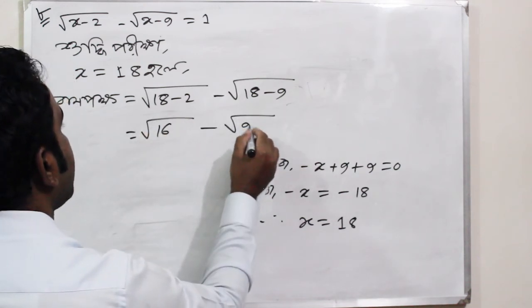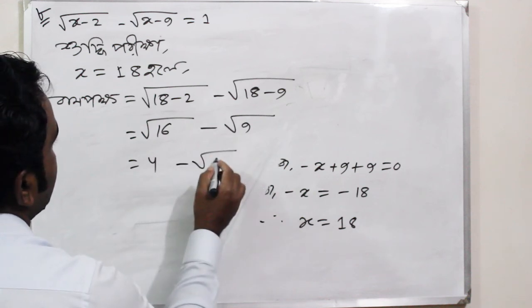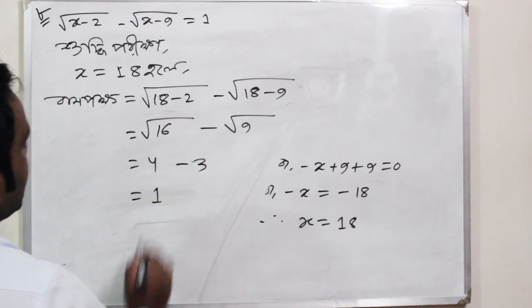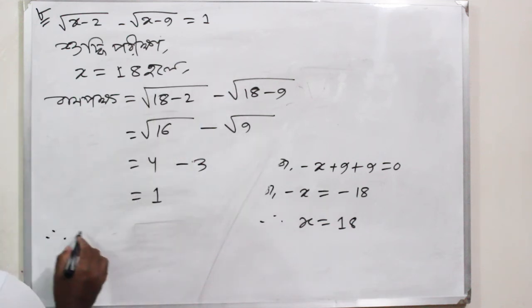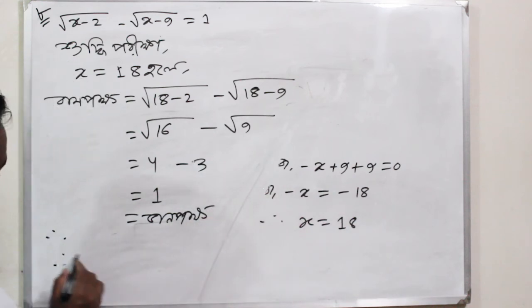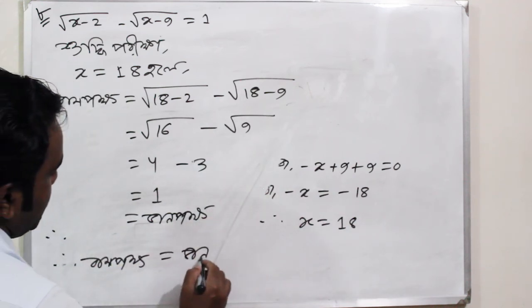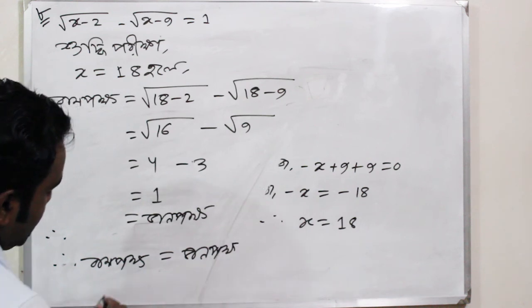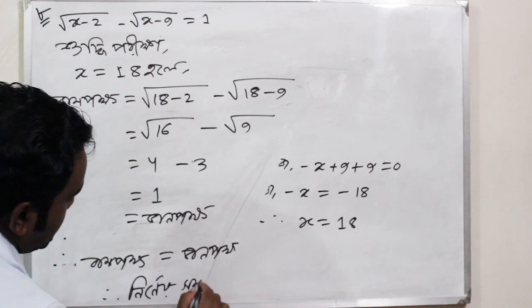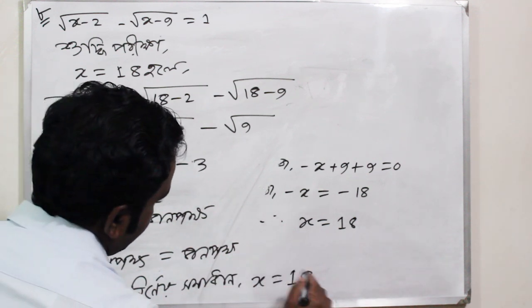I will put 4 minus 1 root over 3 equals 1. I am going to write it down. X equals 18.